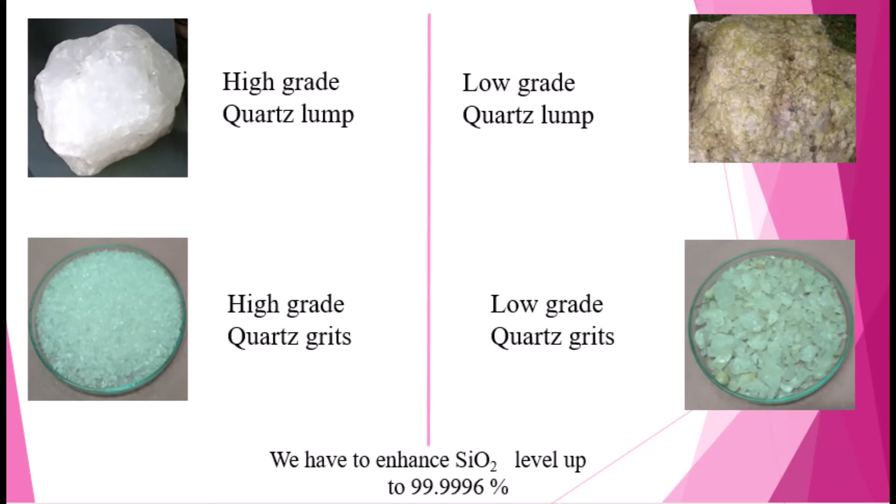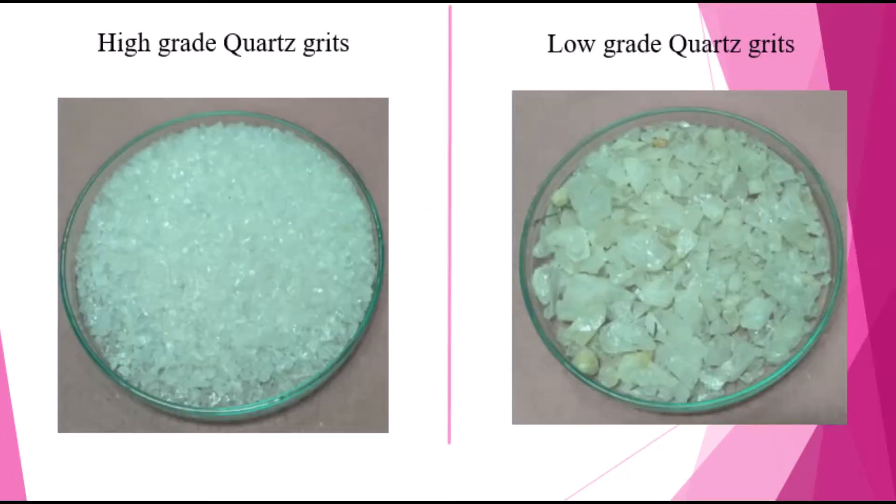When producing white color low grade grids, there are some impurity materials present as well. We never throw these out — we keep them to the side and use this very low grade material for another value addition process.